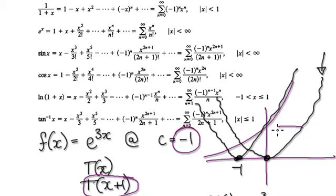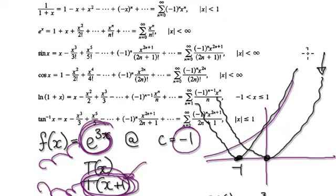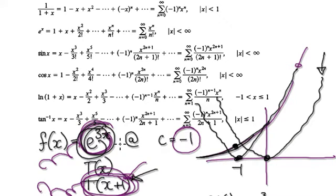Then we would differentiate this, and differentiate it again and again. We would demand the first derivative of this to match up with the first derivative of this, and the second derivative of this to match up with the second derivative of this. When you make those demands, this black line here will slowly map on top of what you're trying to investigate — e to the power of 3x.